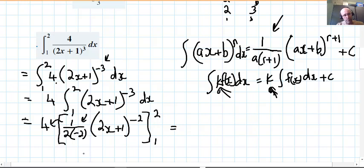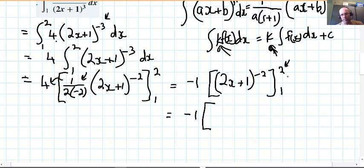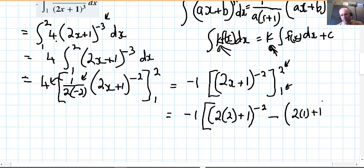But we've got 4 and we've got 1 over negative 4, so that'll just be negative 1. And then we write the rest in. So upper limit minus lower limit, so it's going to be open brackets, 2 times upper limit, 2 times 2 plus 1 to the negative 2, minus, because it's f of b minus f of a, 2 times 1 plus 1 to the negative 2.